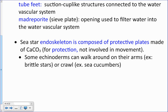They also have an endoskeleton to help maintain their structure. It's composed of protective plates made of calcium carbonate and is mostly for protection — it's not involved in movement at all, that's the water vascular system's job. It's what gives echinoderms their hard or crunchy feel.